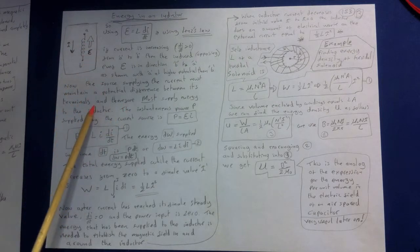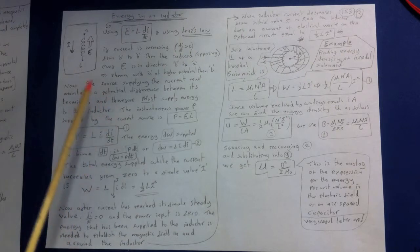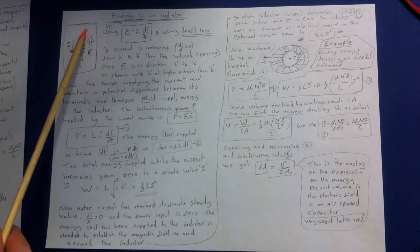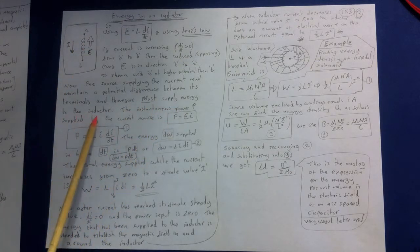To keep that going, the source itself must maintain that potential difference between its terminals. So a battery, for example, will always try and keep the same voltage. To maintain that, if it's got to go against an EMF, then obviously it requires power. So it must supply energy to the inductor.